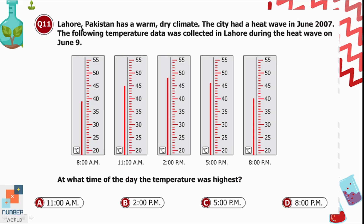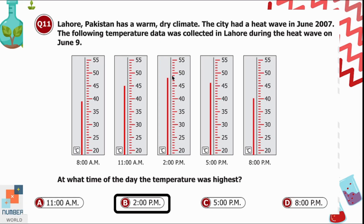Question 11: Lahore, Pakistan has a warm, dry climate. The city had a heat wave in June 2007, and temperature data was collected during the heat wave on June 9. At what time of day was the temperature highest? The temperature was highest at 2 PM, so option B is the correct answer.